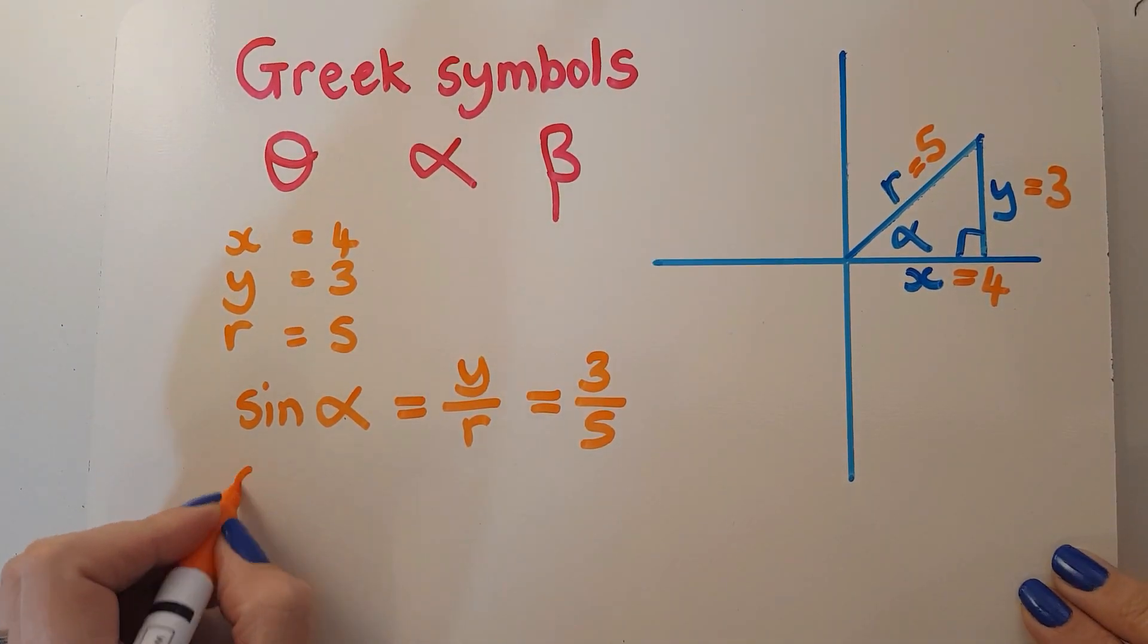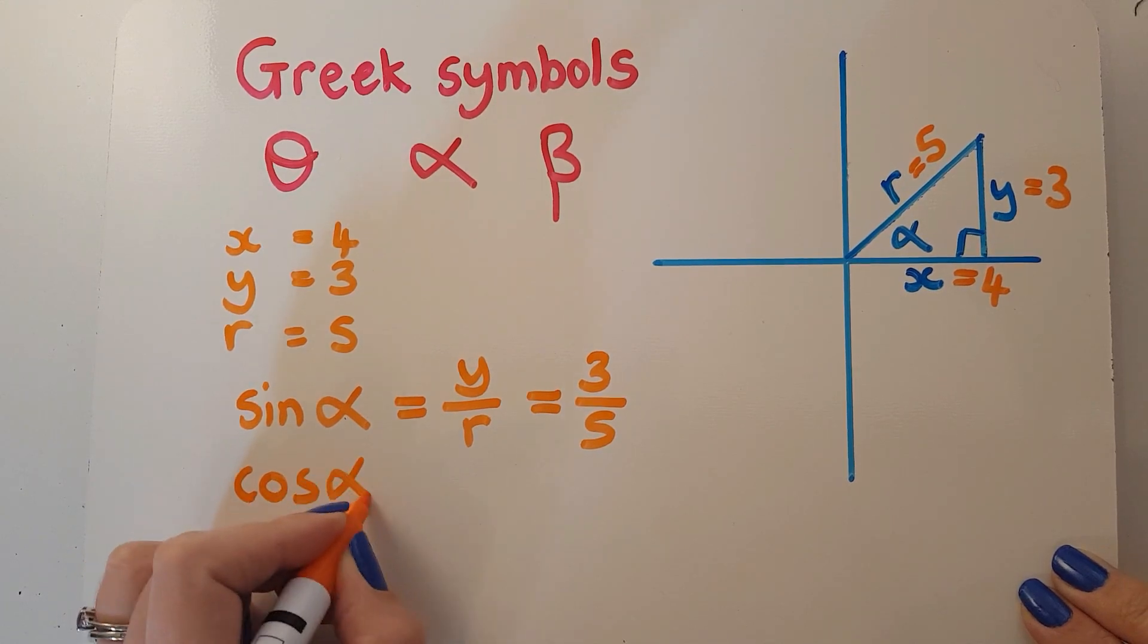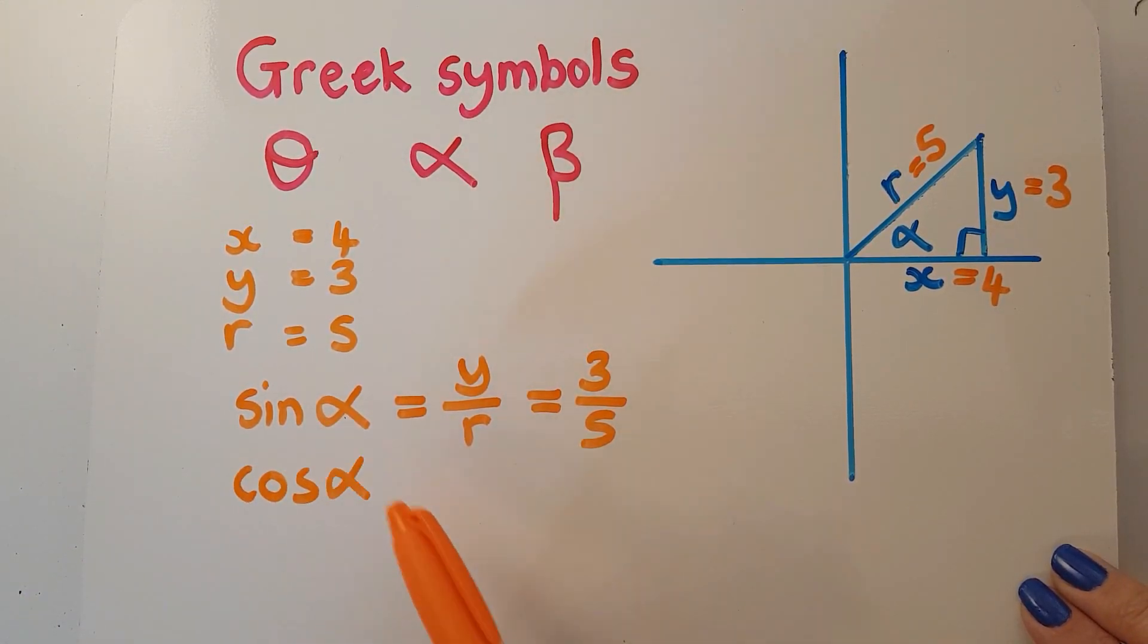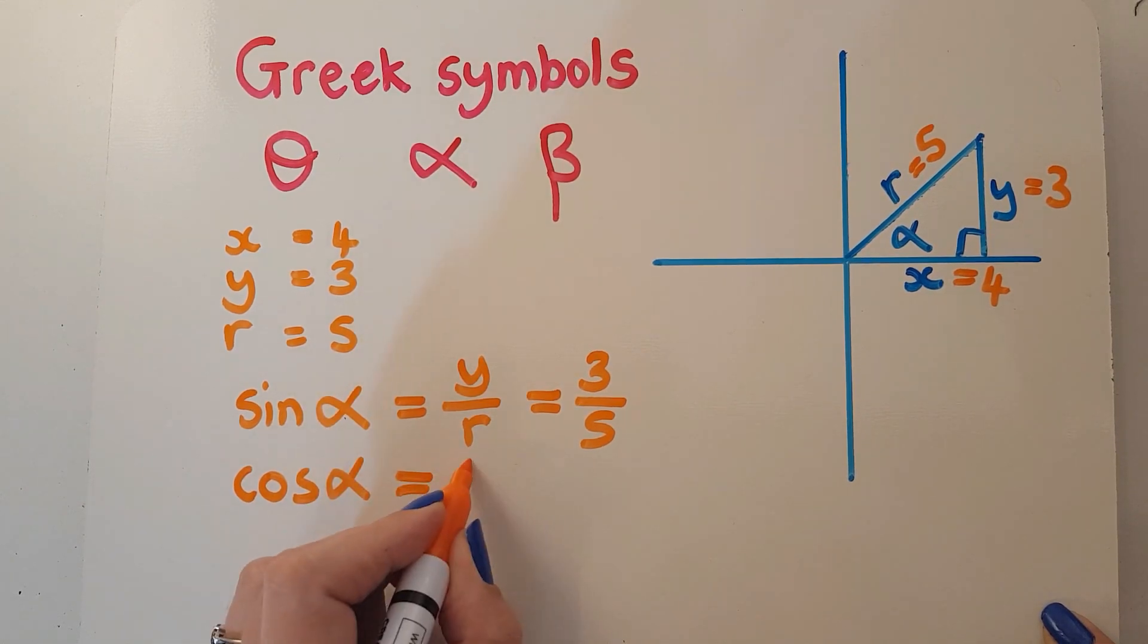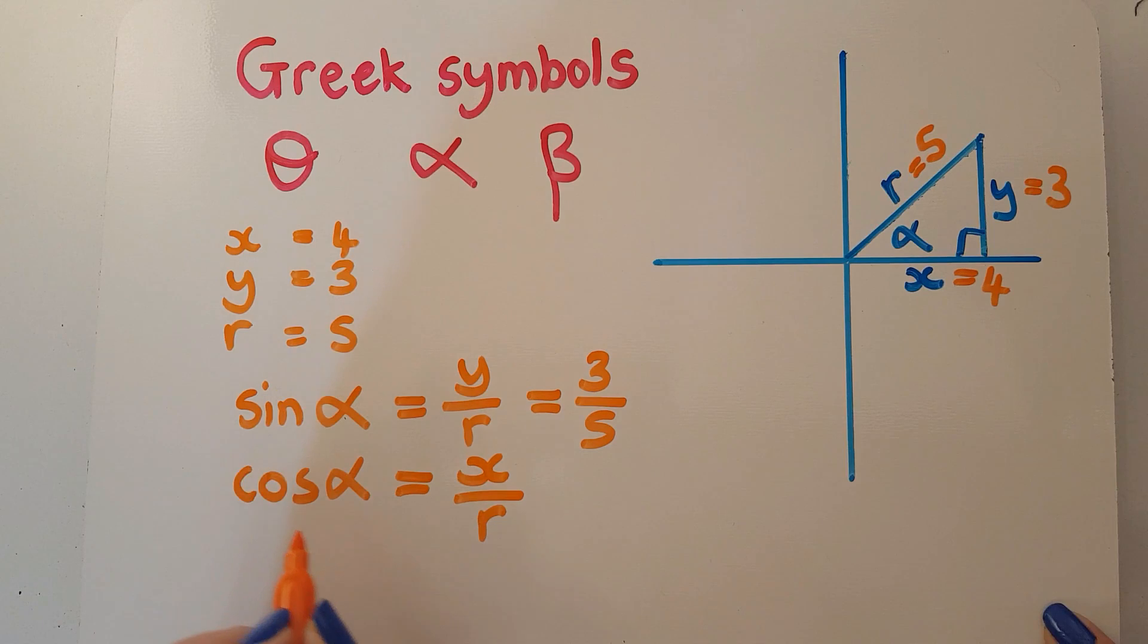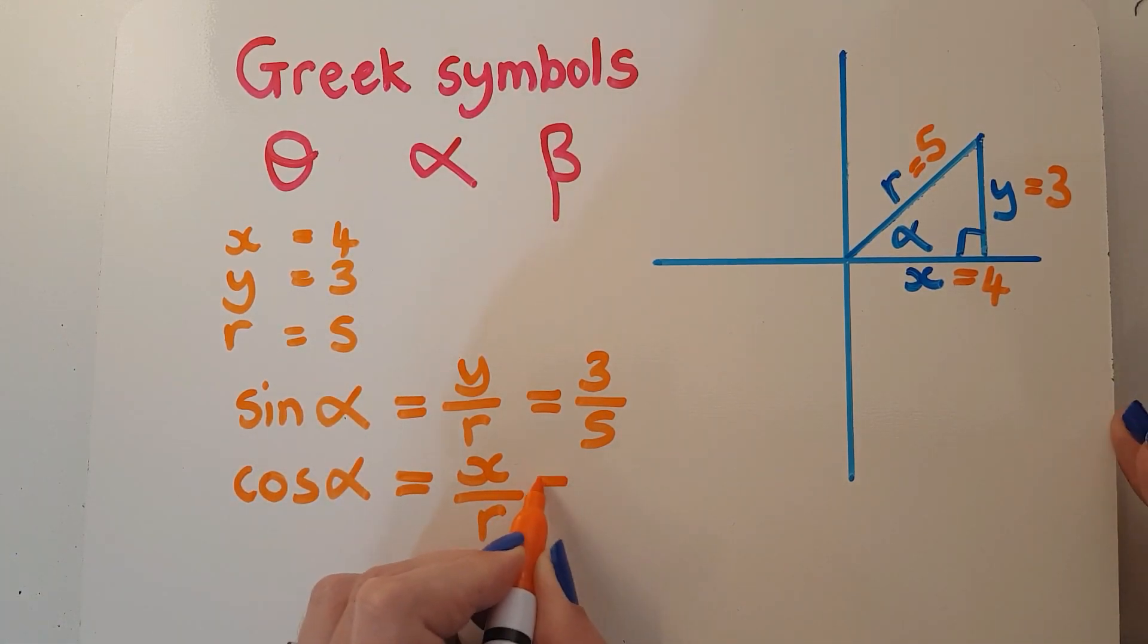So the cos function—we now shorten them. Sin stays the same pronunciation, but we change it to without an e on the end. The cos function is the x over r. What we're doing is replacing the cos function of alpha with the numbers in the fraction. So x is 4 and r is 5, giving us cos α = 4/5.